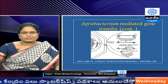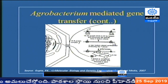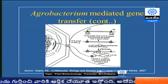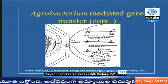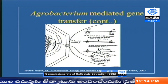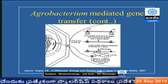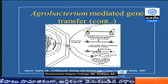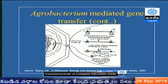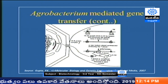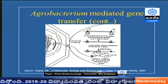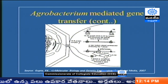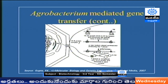Vir E proteins help the single-stranded DNA to enter through the cell membrane and finally the nuclear membrane. This is the schematic diagram showing how the vir genes help. The DNA with vir E proteins enters through the plasma membrane into the nuclear membrane and integrates into the plant genome. In some cases, transformation is transient — the DNA may not integrate into the host genome but will be expressed in the cytoplasm itself. That is the overview of Agrobacterium-mediated gene transfer.